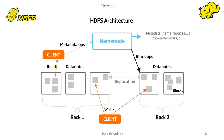HDFS is a distributed, scalable, and portable file system written in Java for the Hadoop framework. HDFS stores large files, typically in the range of gigabytes to petabytes, across multiple machines and data nodes. These nodes can talk to each other to rebalance data, move copies around, and to keep the replication of data high.